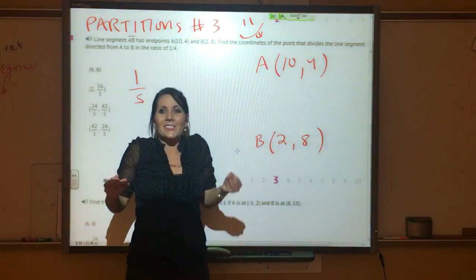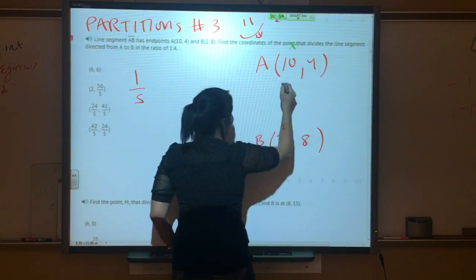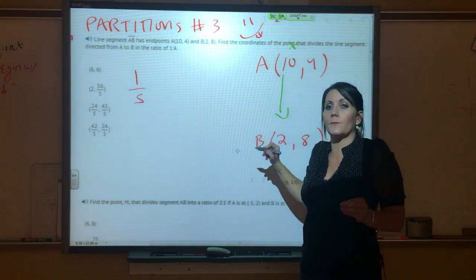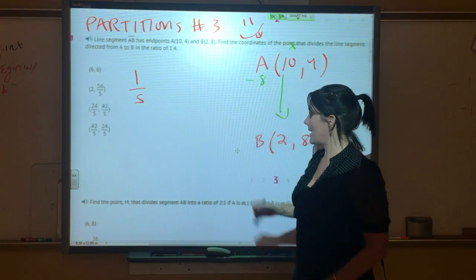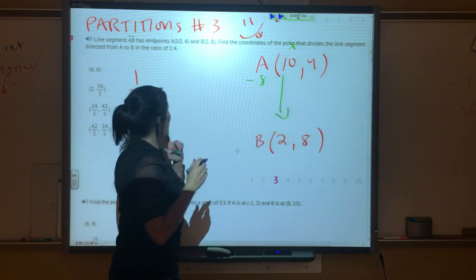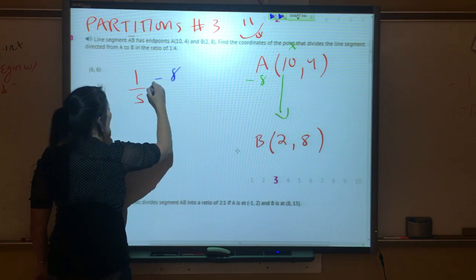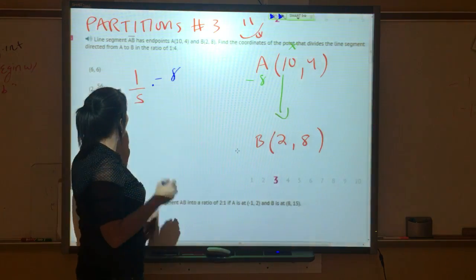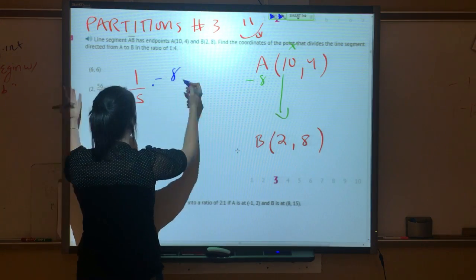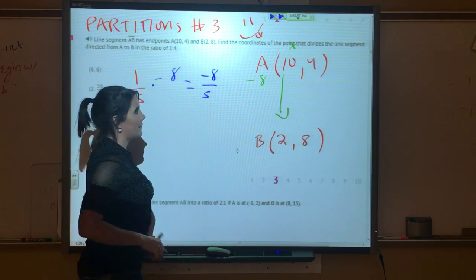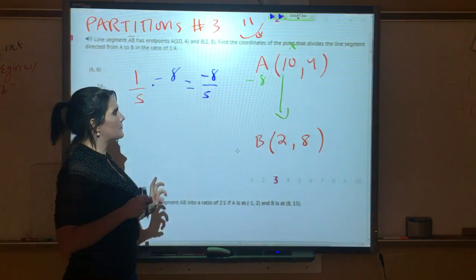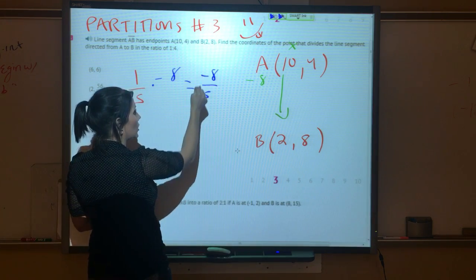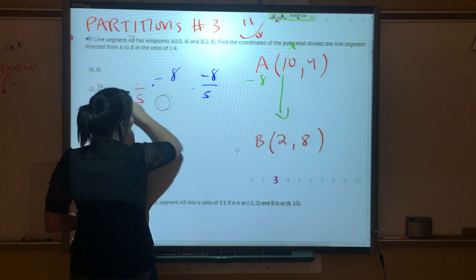So again, you ask yourself, how do we get from here to here? Well, from 10 to 2, we are subtracting 8. That is 100% of the way. We do not want 100%, we want one-fifth of that, so we multiply. So when you do this, this is -8/5. So instead of subtracting 8, we are going to subtract 8/5 from 10.